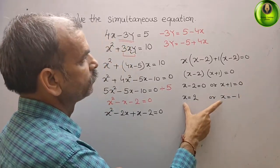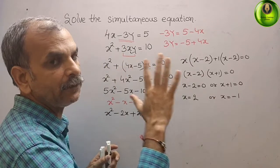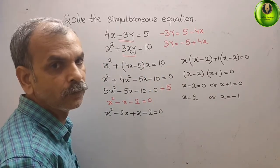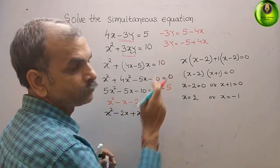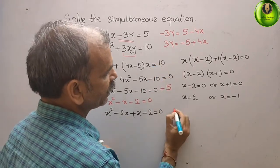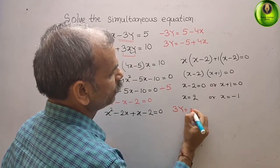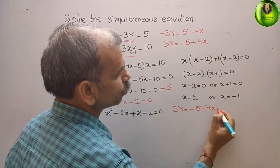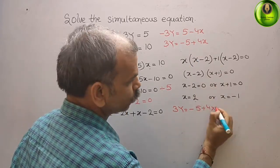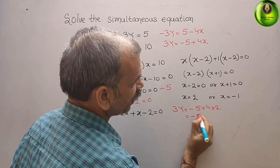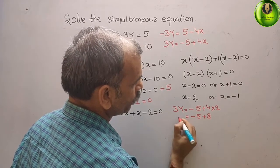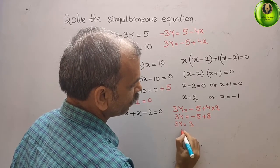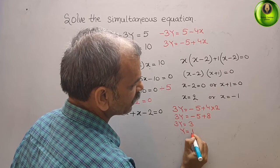Now substitute these x values back. Substituting x equals 2: 3y equals minus 5 plus 4 times 2, which is minus 5 plus 8, so 3y equals 3, therefore y equals 1.